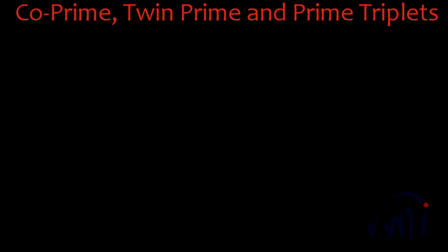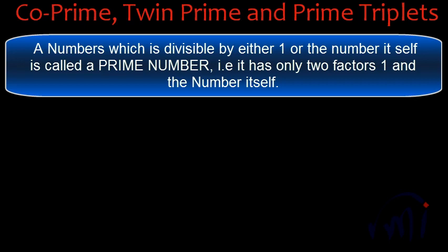Hi. In our earlier videos we have learnt about prime numbers and we have also learnt how to find the prime numbers between any two given numbers. In this video we are going to learn about co-prime numbers, twin prime numbers, and prime triplets. A prime number is a number which has only two factors: one is 1 and another factor is the number itself. So other than 1 and the number itself it doesn't have any other factor. Such numbers are called prime numbers.